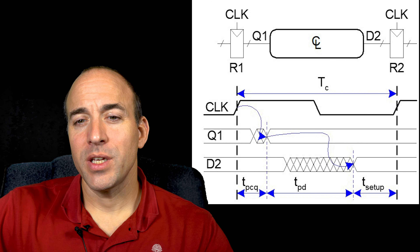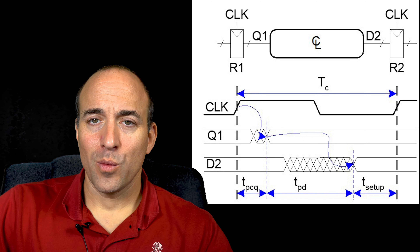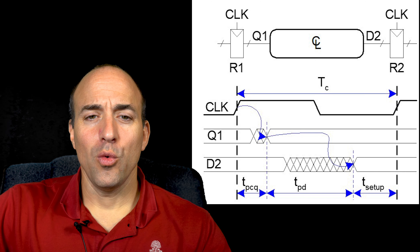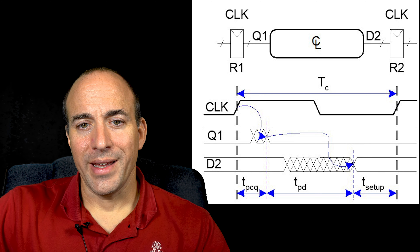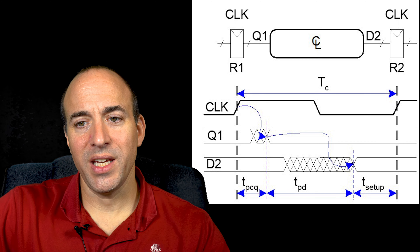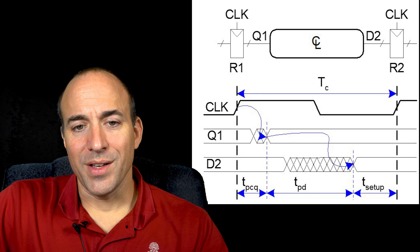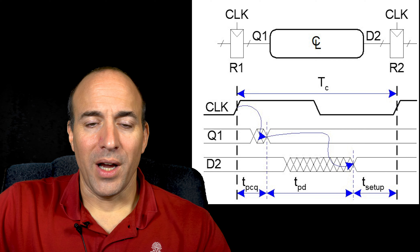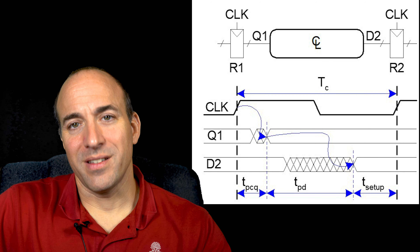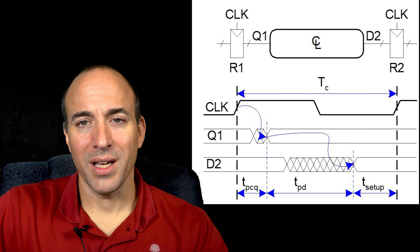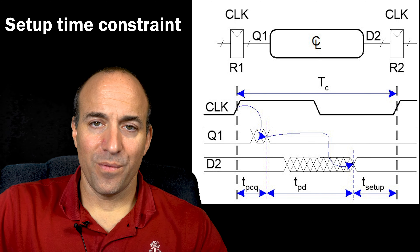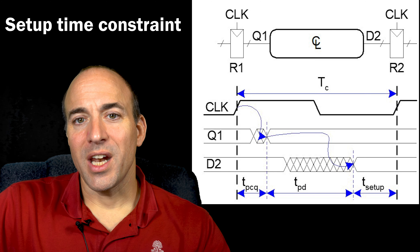In finite state machines and pipelines, the Q output of register R1 — also labeled Q1 — feeds the inputs of the combinational logic between the two registers. The output of the combinational logic feeds into the D input of register R2, labeled D2. These two registers will be the same in the case of a finite state machine, or different in the case of a pipeline. We must guarantee that the minimum and maximum delay between the registers satisfies the setup and hold time.